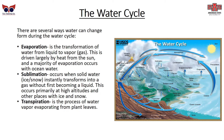There are several ways water can change form during the water cycle. Evaporation is the transformation of water from a liquid to a vapor or gas. This is driven largely by heat from the sun, and a majority of the evaporation occurs with ocean water. Sublimation occurs when solid water — ice or snow — instantly transforms to a gas without first becoming a liquid. This primarily occurs at high altitudes and other places with ice and snow.